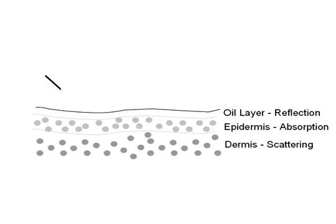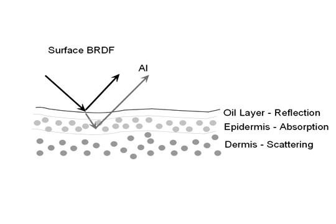We model specular reflection off the oil-air interface on the skin surface using a bidirectional reflectance distribution function. Diffuse reflection is mainly due to two components: light absorption by tissue and pigment particles — melanin — in the epidermis, and strong light scattering due to collagen fibers and blood in the dermis.